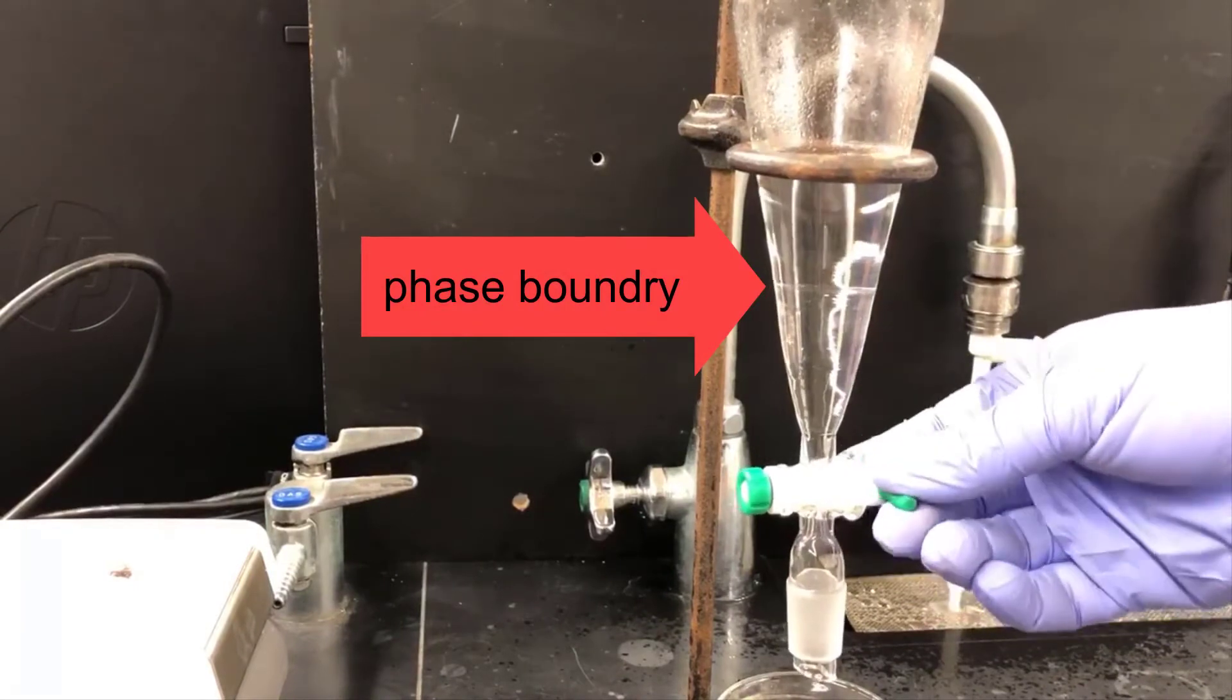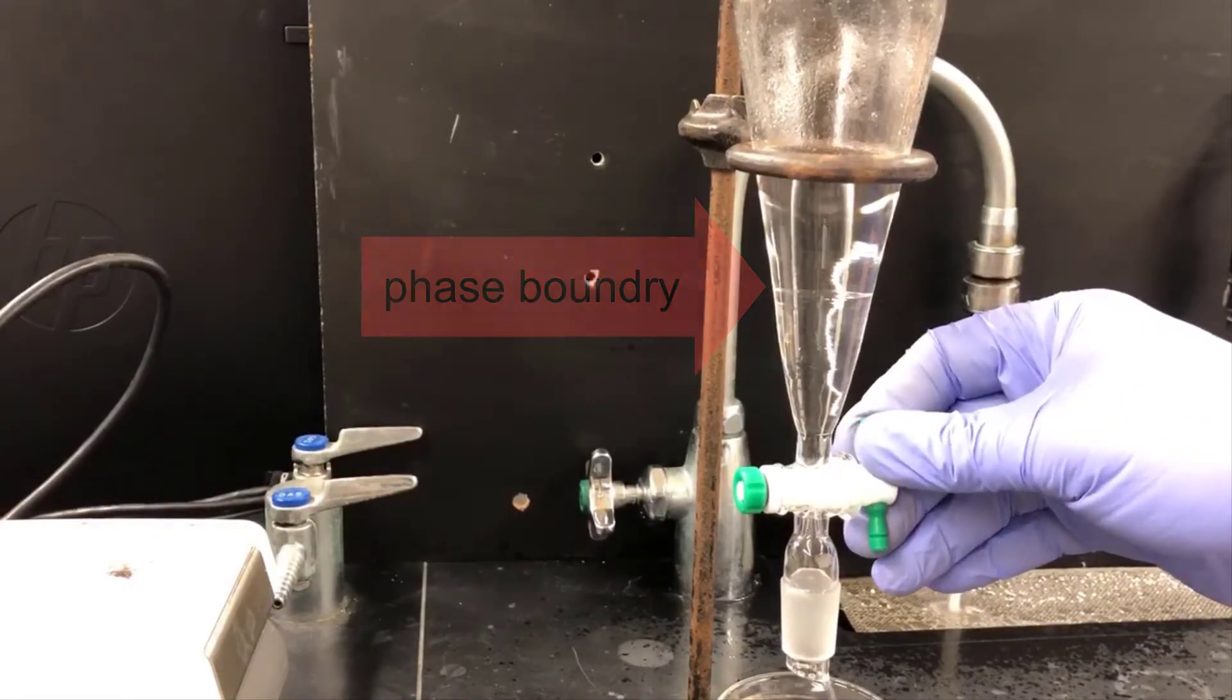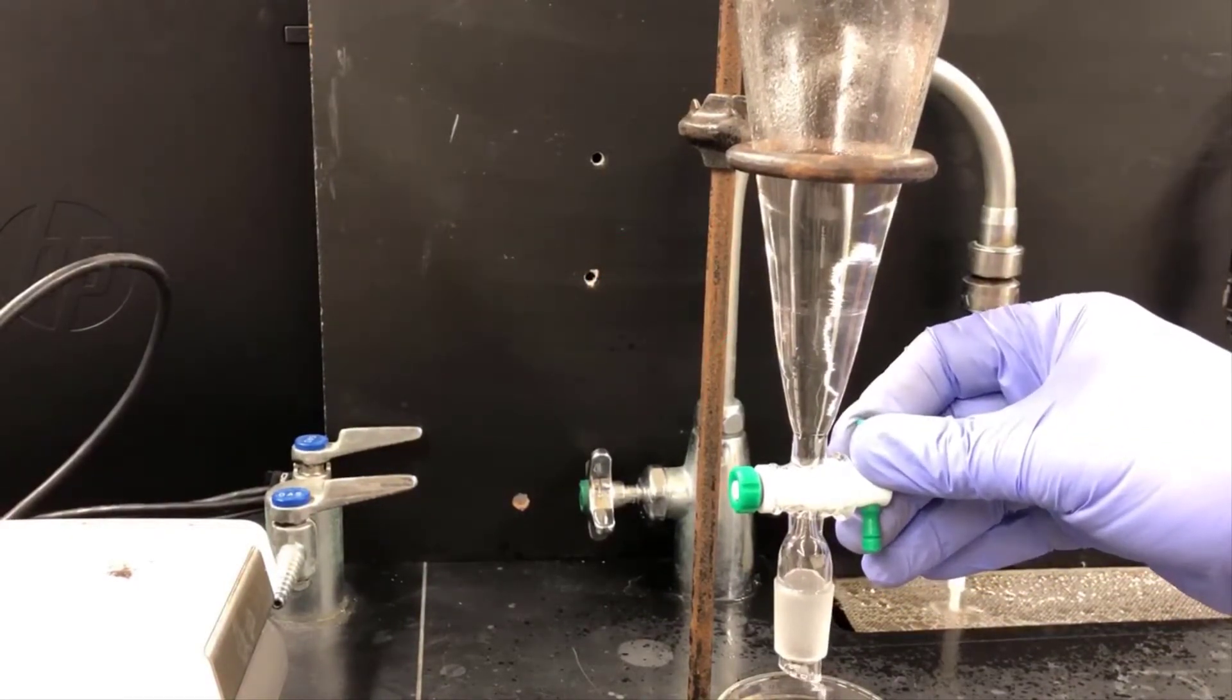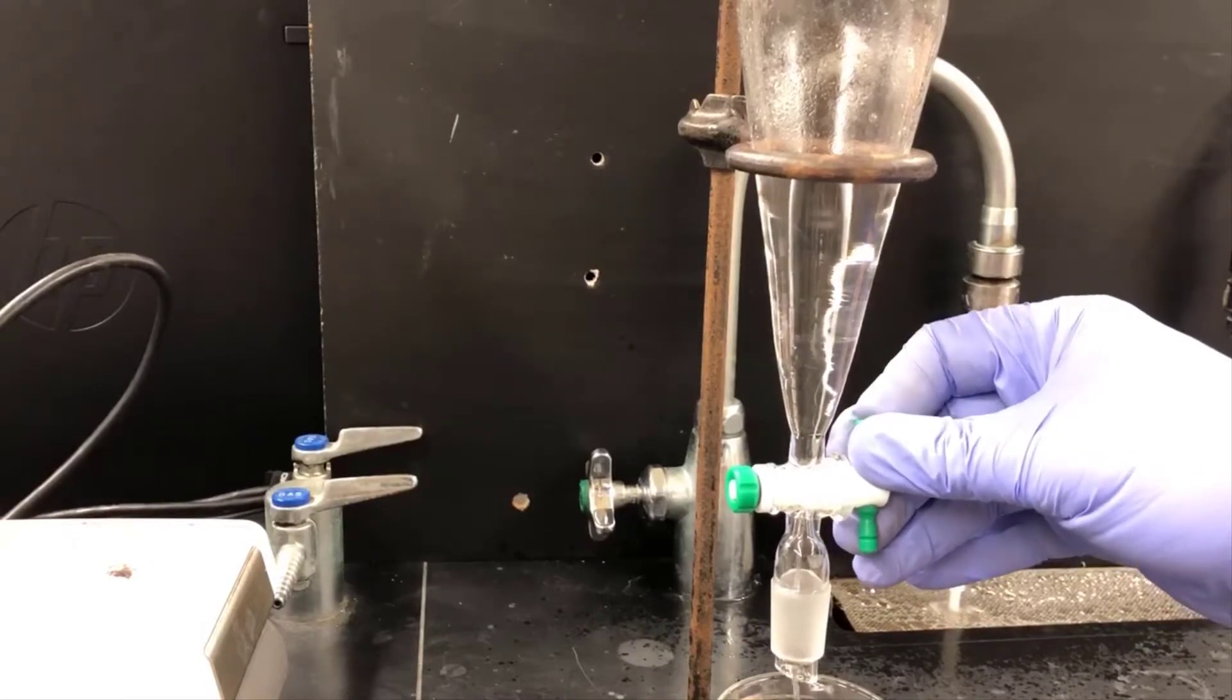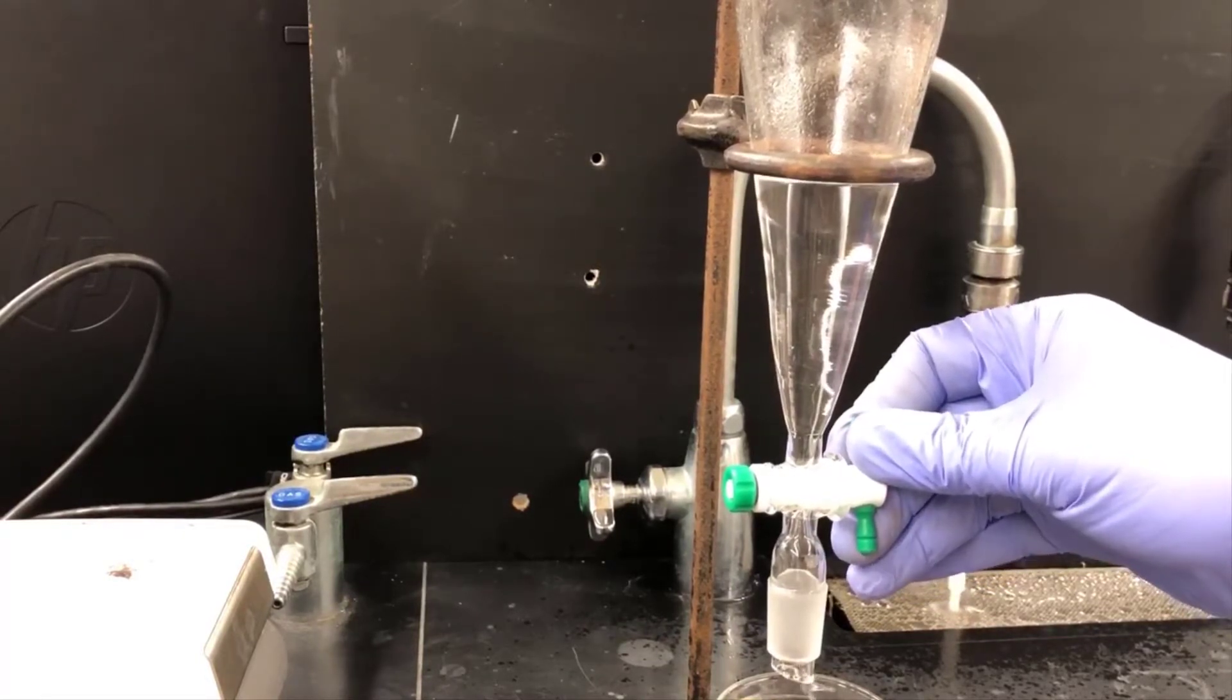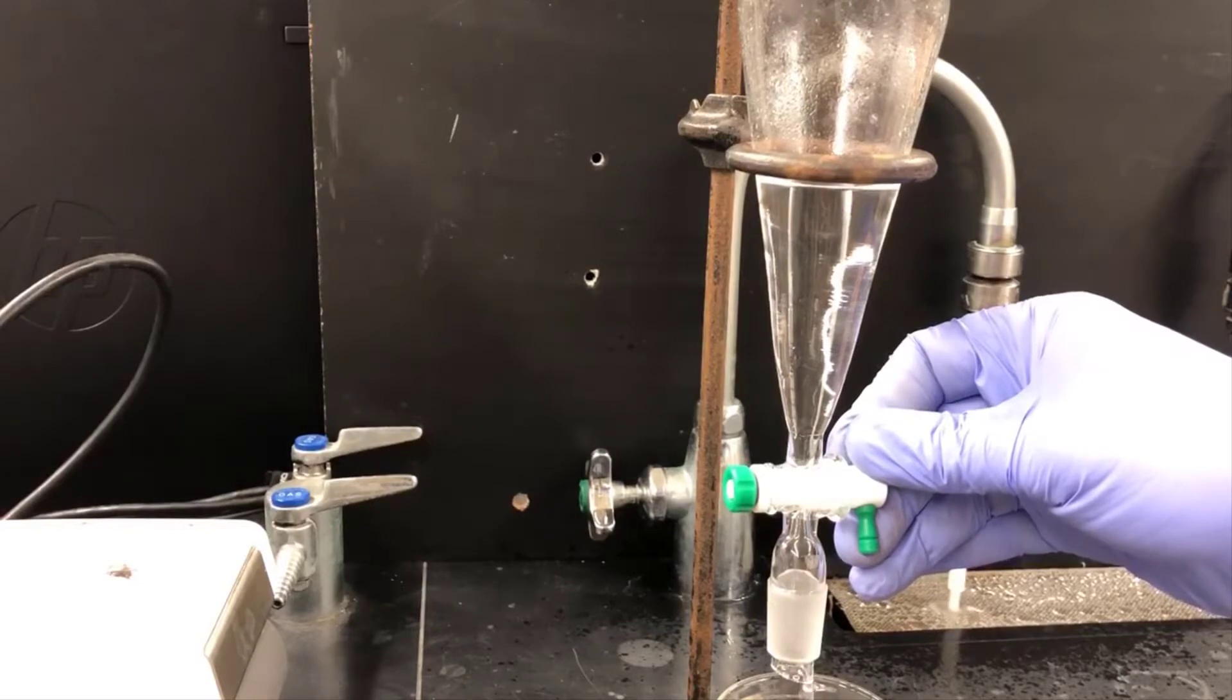Here's a close-up of the separatory funnel so you can see the phase boundary between the two liquids. The lower phase is the brine phase, and I'm draining that off into a waste container below. The upper layer is the clarified ethyl acetate layer that contains caffeine.